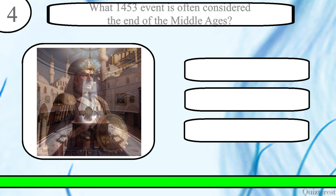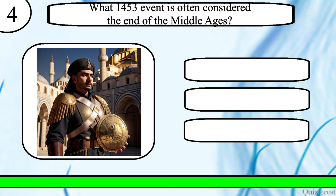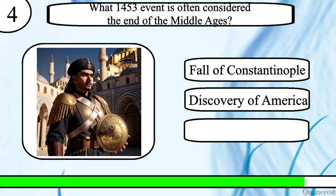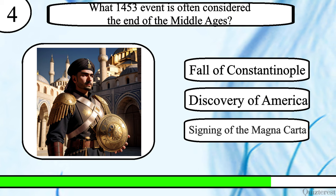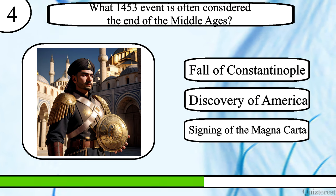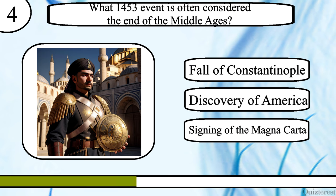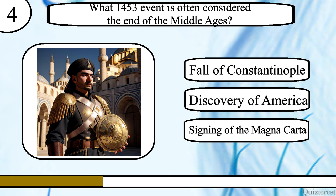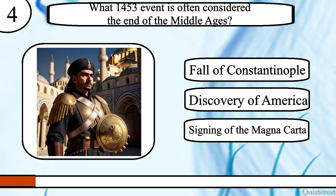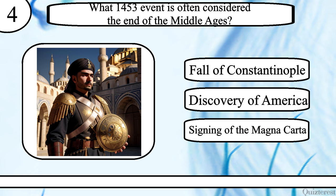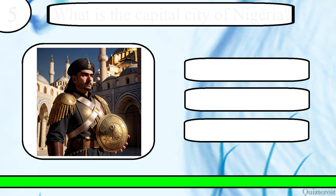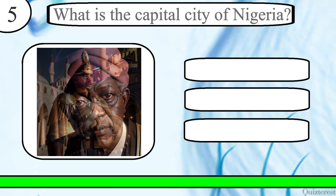Question 4. What 1453 event is often considered the end of the Middle Ages? The fall of Constantinople, the discovery of America, or the signing of the Magna Carta? The correct answer is the fall of Constantinople.